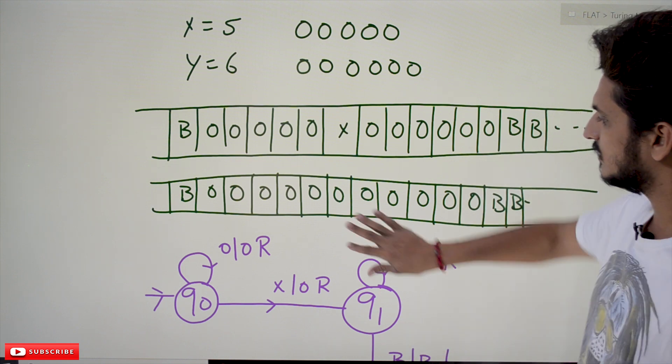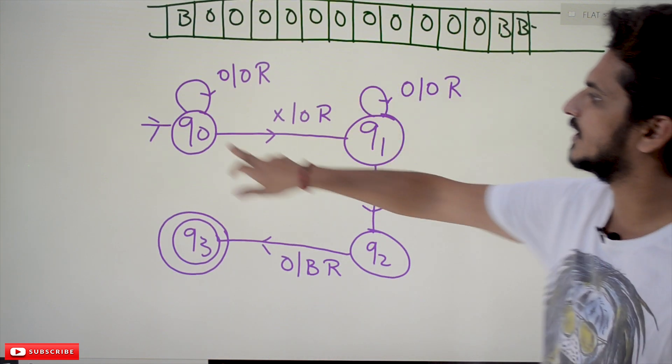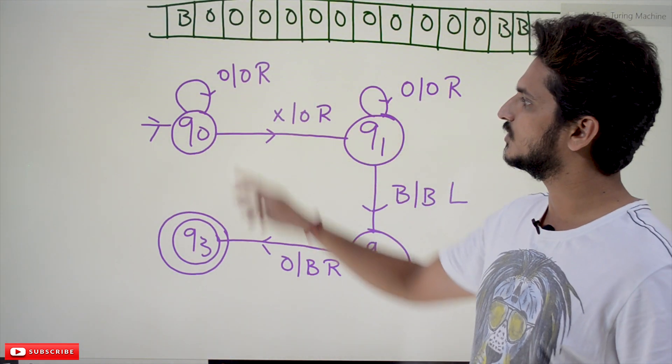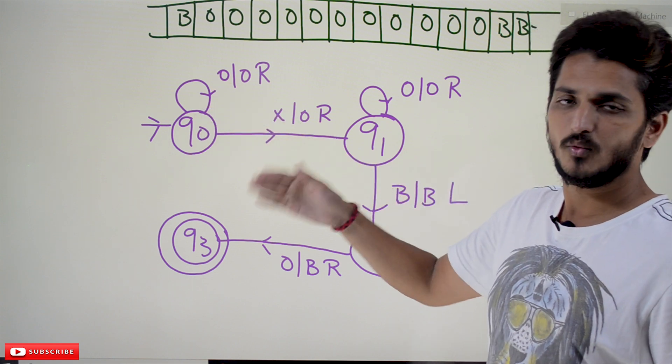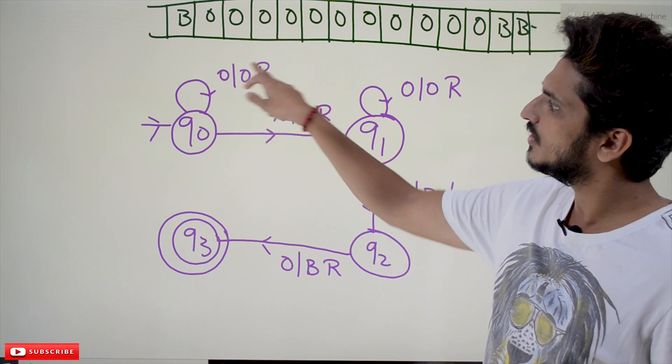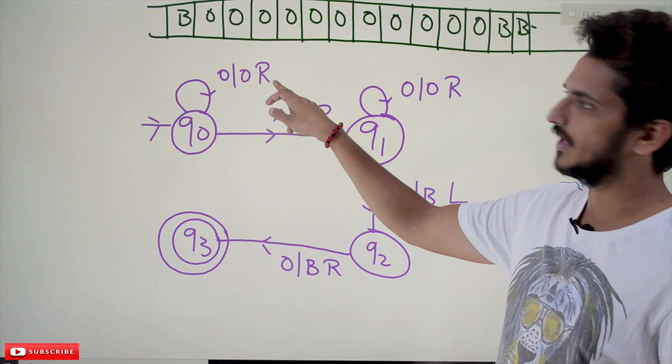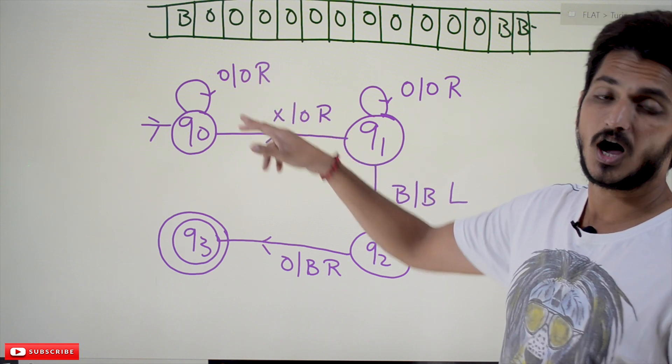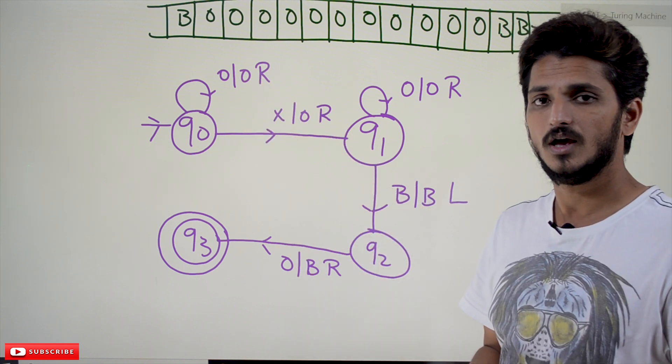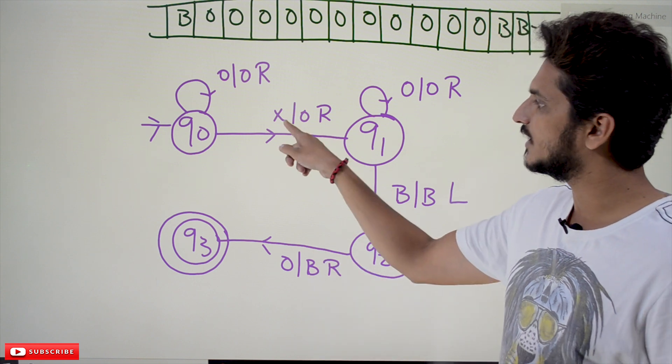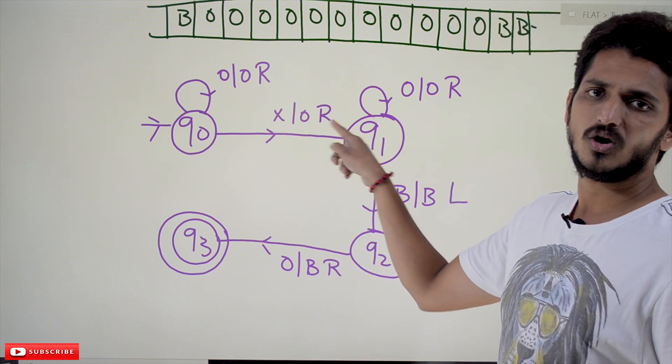Now write the logic, how to convert it. q0 - we start from q0. We keep on moving right side. Whenever you find 0, make it as 0, keep moving right. How long do you have to go? Whenever you find x, convert it into 0 and move right side. Now we are going to q1 state.